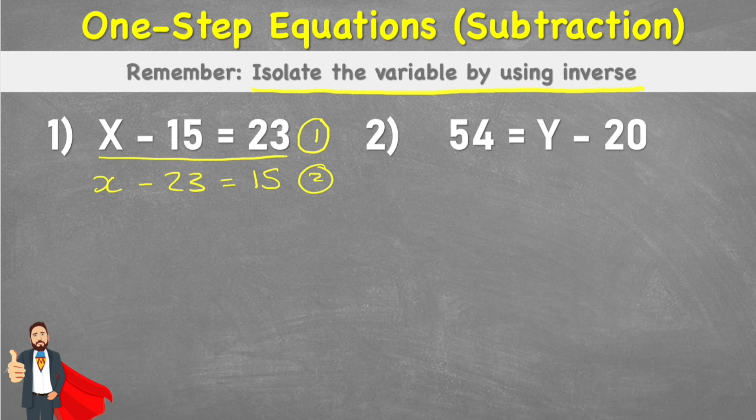And that would be the second number sentence in the number family. And if you notice, they are both subtraction. But we also have two inverse questions. And the inverse of subtraction is addition. So I could say that 23 plus 15 equals x. Or I could say that 15 plus 23 equals x.